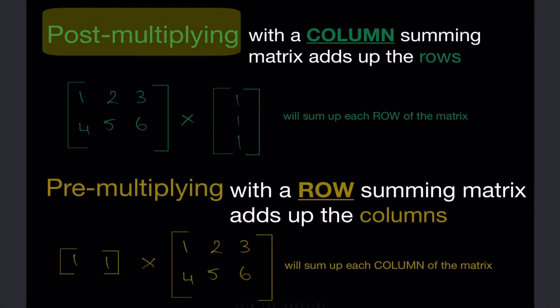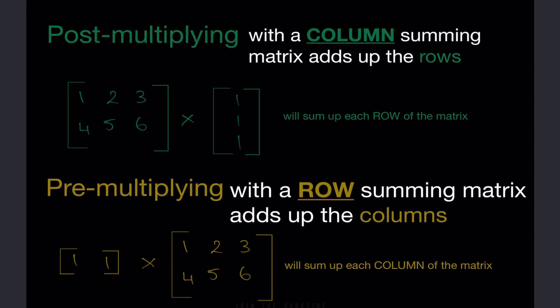There are two ways to use summing matrices. The first is by post-multiplying with a column summing matrix. This adds up the rows. Post-multiplying means that the summing matrix is at the end of our calculation.